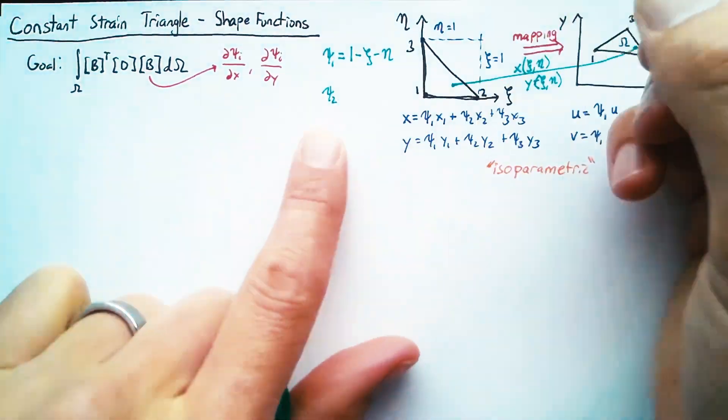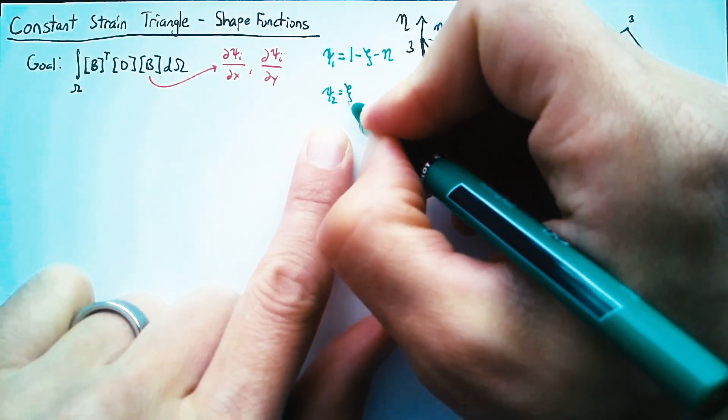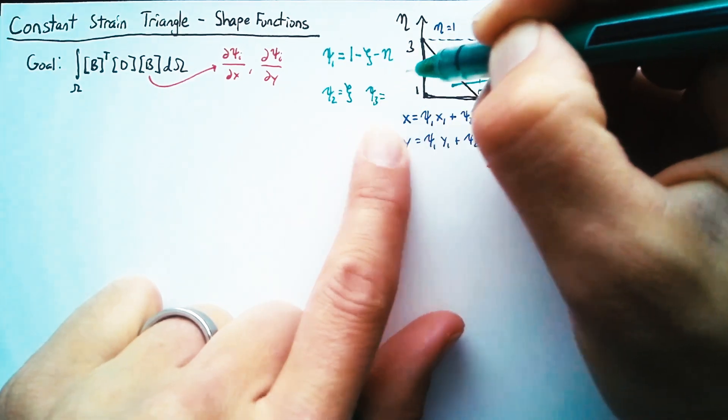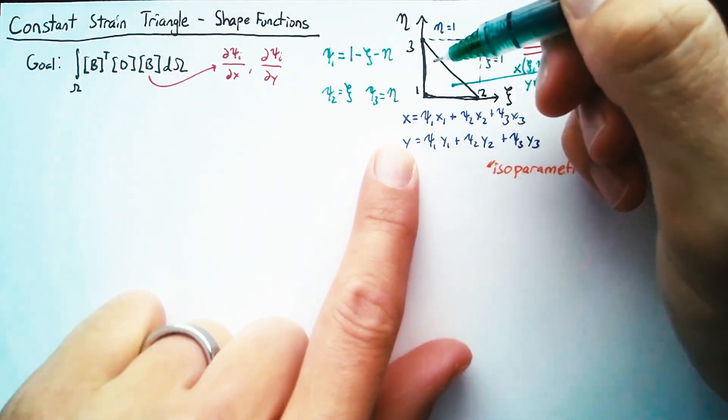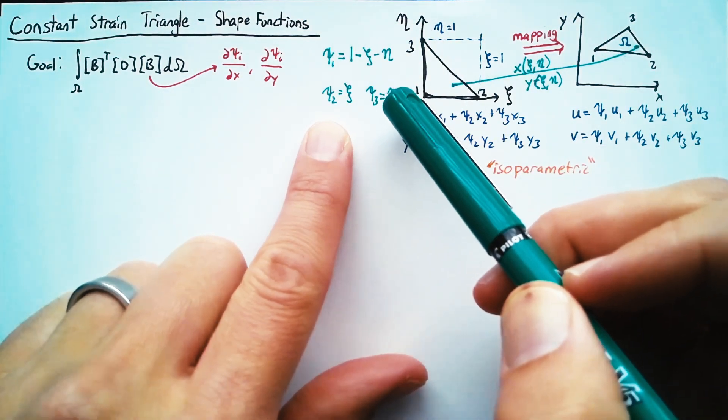Psi two needs to be one here and zero for both of these. Well, that's just going to be the function C. And then Psi three is just going to be the function eta. So these get to be very simple shape functions.